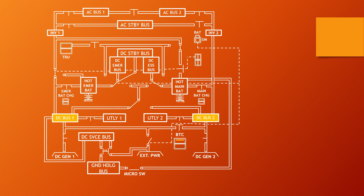DC Bus 2 is normally powered by DC Generator 2, and DC Bus 2 normally supplies the Hot Main Bat Bus, DC Essential Bus, Utility Bus 2, and Inverter 2. Normally, most of the Captain-side DC-operated components are supplied by DC Bus 1 and the First Officer side by DC Bus 2.